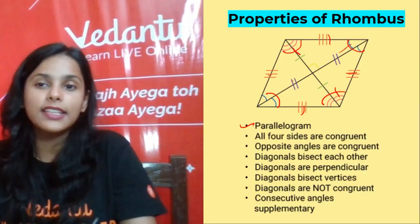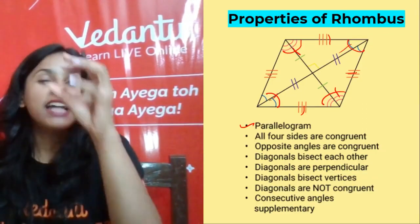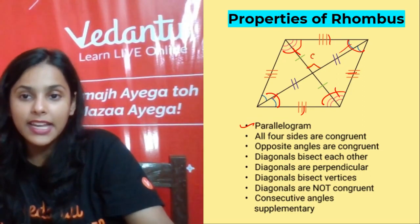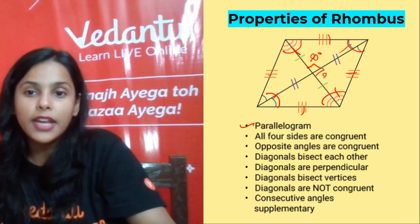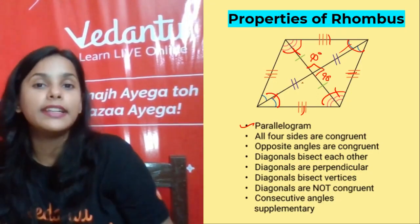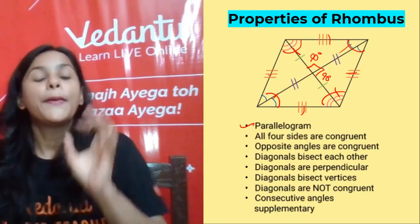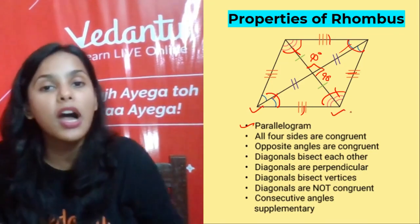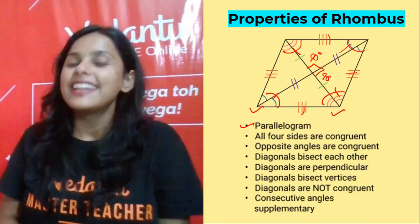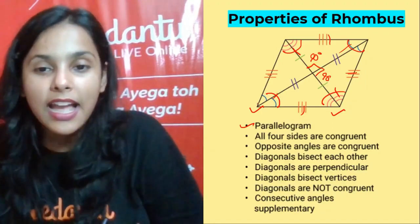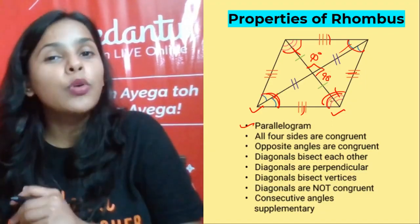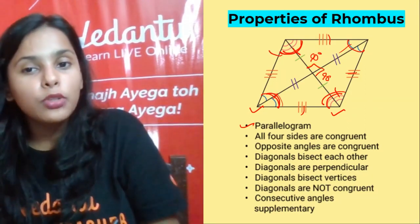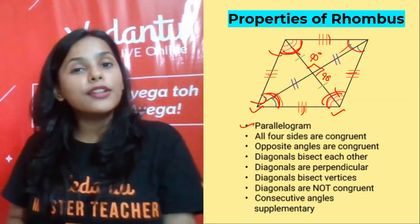The diagonals are perpendicular to each other — you can see they make a 90 degree angle. This is also 90 degrees, and this is also 90 degrees. Also, consecutive angles are supplementary, meaning adjacent angles sum to 180 degrees. If you add this angle and this adjacent angle, you will get a sum of 180 degrees because they are supplementary.